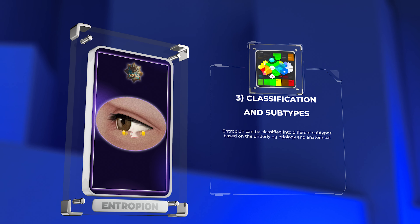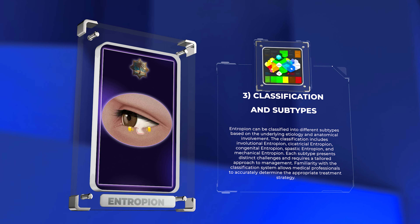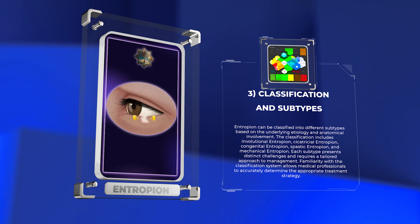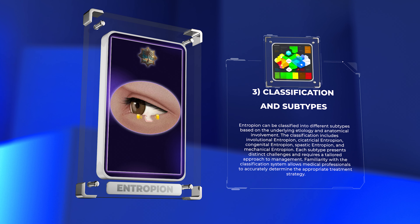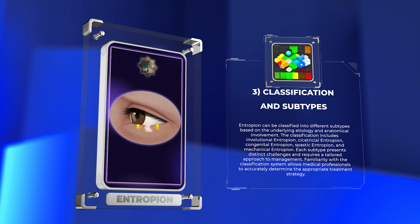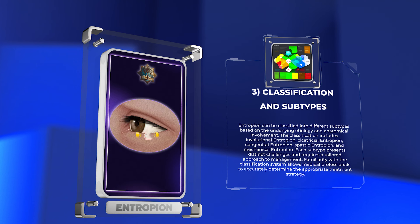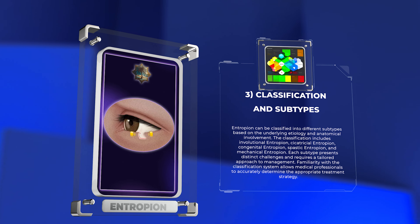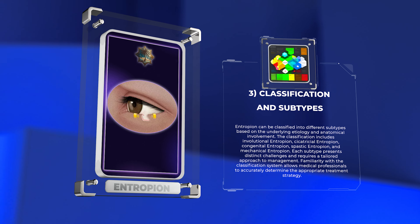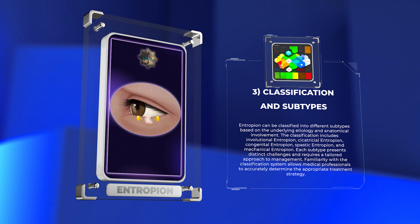Entropion can be classified into different subtypes based on the underlying etiology and anatomical involvement. The classification includes involutional entropion, cicatricial entropion, congenital entropion, spastic entropion, and mechanical entropion. Each subtype presents distinct challenges and requires a tailored approach to management.